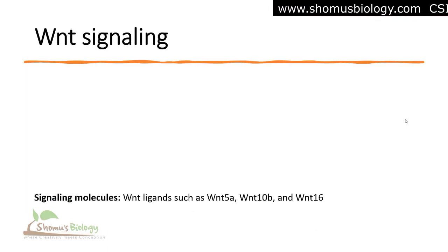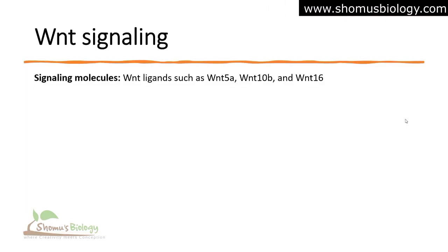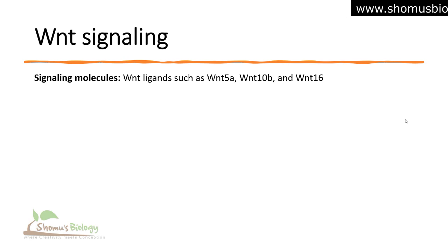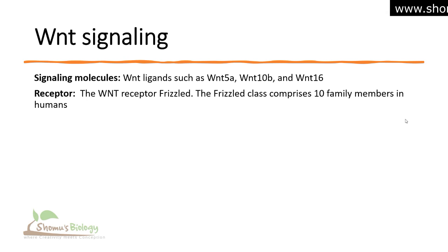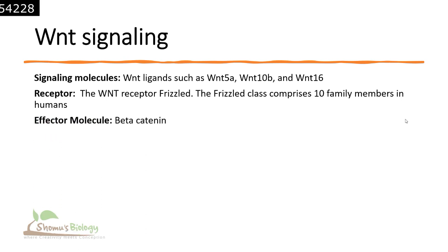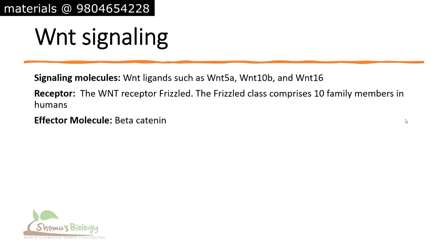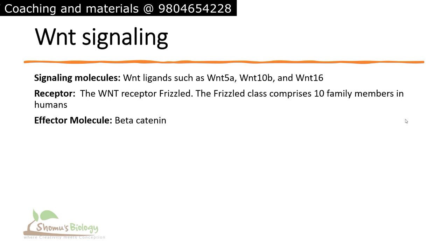The signaling molecule used is the WNT ligand, such as WNT5A, WNT10B, WNT16, and there are different examples. The receptor used is known as the Frizzled receptor, which comprises 10 family members in humans alone. The effector molecule used is known as beta-catenin, so the WNT signaling pathway is also known as the beta-catenin signaling pathway — the two terms are used synonymously.